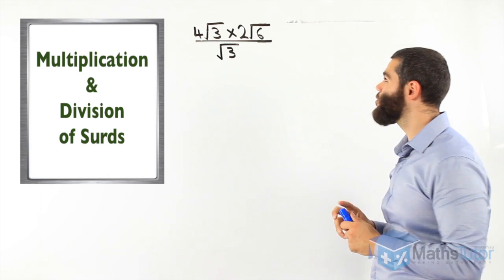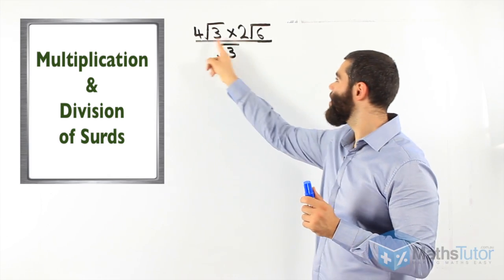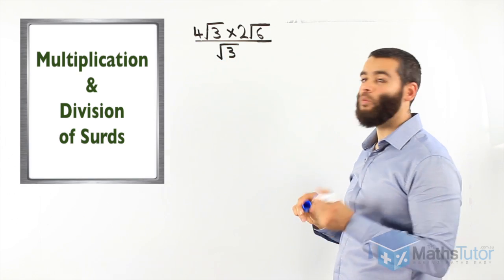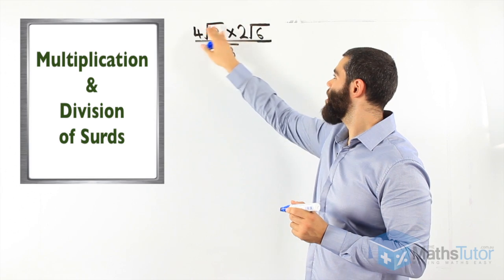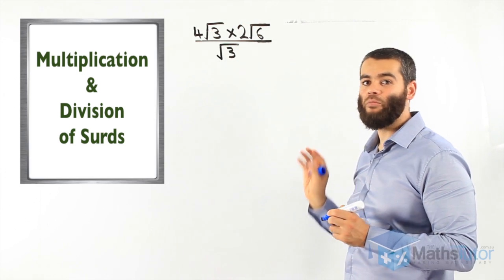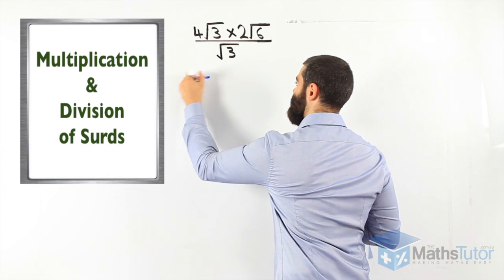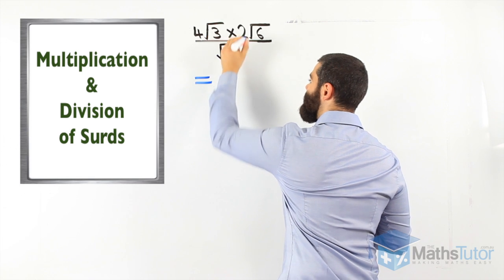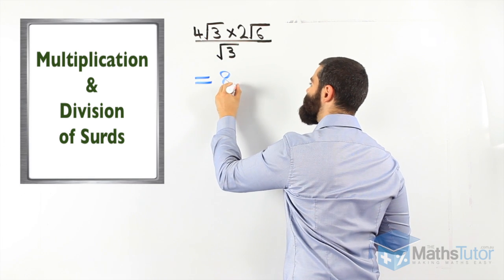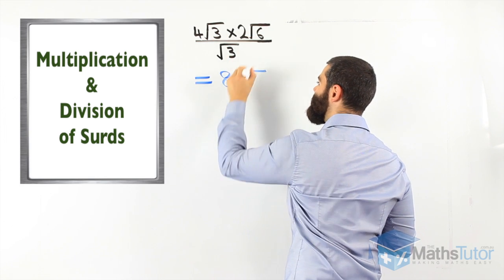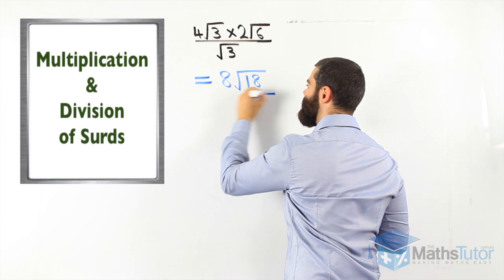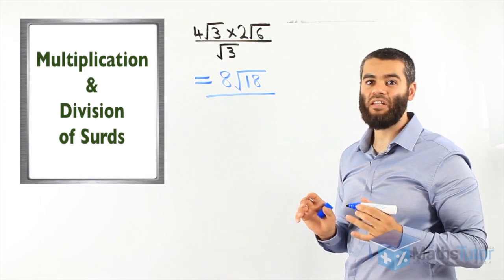4 root 3 times 2 root 6, all divided by root 3. We multiply the top numerators and we finish them off before we actually can divide, if we can divide. So, 4 times 2 is 8. Now the surds, 3 times 6 is 18. 8 root 18.